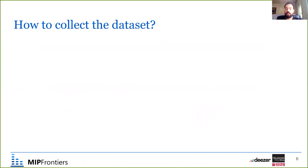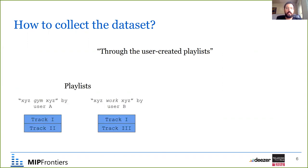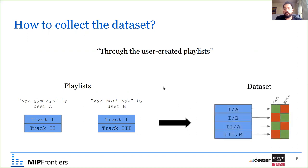How do we collect the dataset? Through user-created playlists. Different users create playlists whose titles indicate the contextual use. We know the creator of each playlist and have the set of tracks included in it. We have different playlists with different contexts, different users, and different tracks. Using this, we collect a dataset of user-track pairs, where for each pair we have the contextual use associated with it.